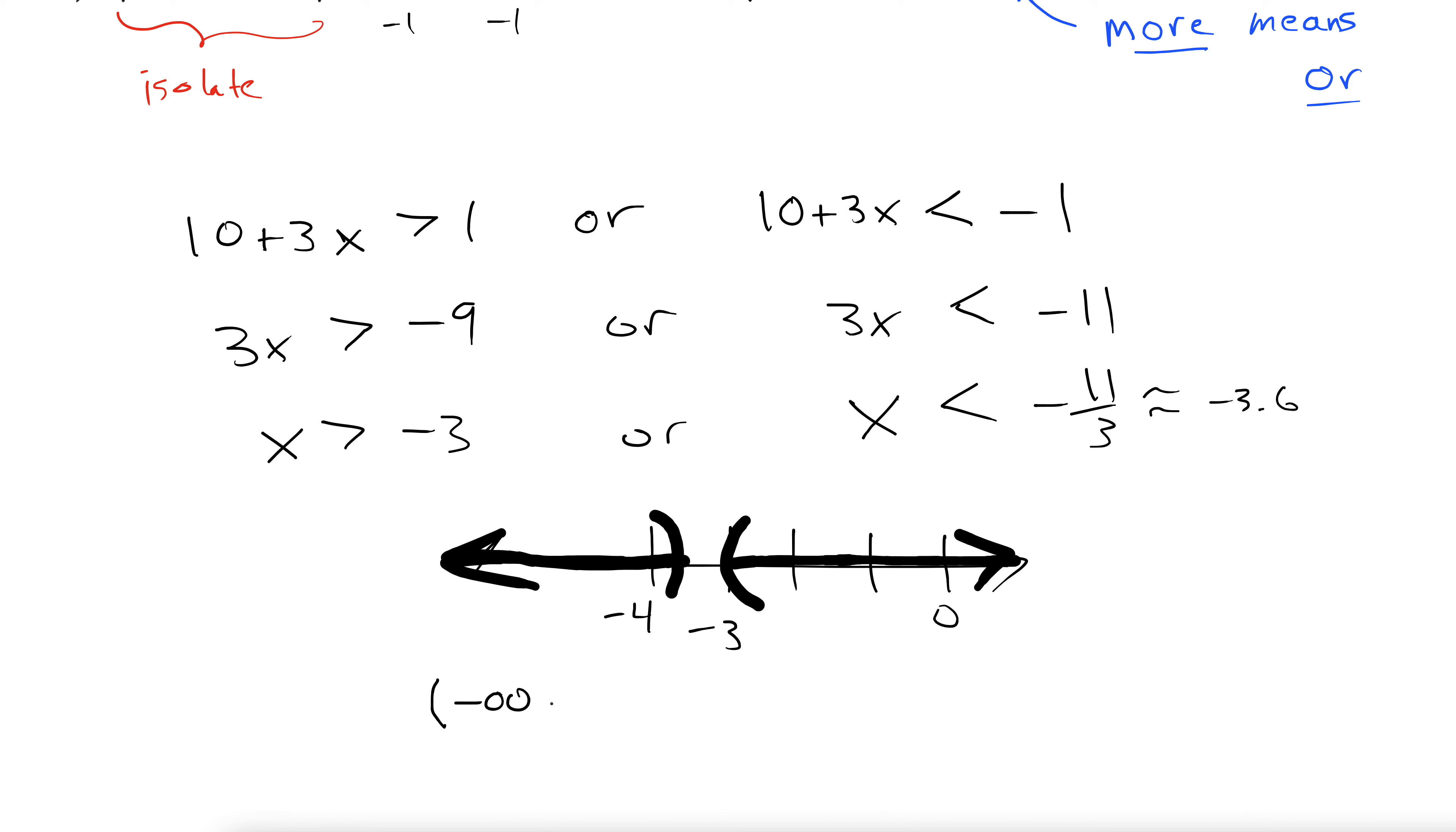Negative infinity, and then we go, go, go, and then we stop at negative 4. We don't include it, so I'm going to put a soft bracket here. We jump over the gap. We do that with a union. Start again at negative 3.